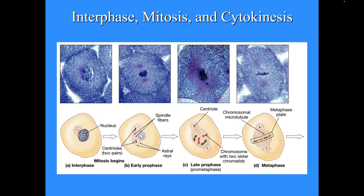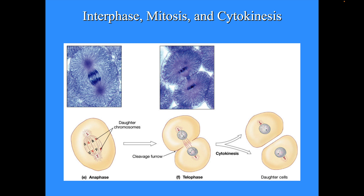A spindle fiber is comprised of chromosomal microtubules. Once you go to anaphase, that's when the sister chromatids are pulled apart. You still have the same number of chromosomes, but they're single-stranded chromosomes instead of double-stranded, and they have exactly the same information. That's important because in meiosis it happens differently — you don't have the sister chromatids being separated in meiosis one.